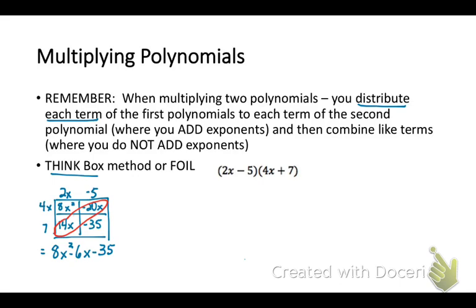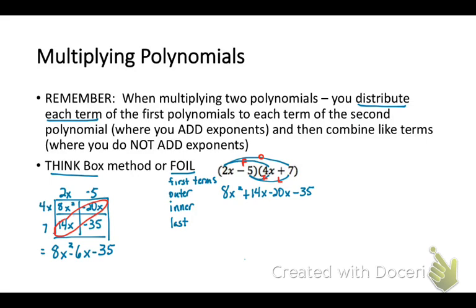You may also prefer the FOIL method, which is an acronym to help you remember how to multiply all terms together. First, multiply the first terms together to get 8x squared. Then the outer terms give 14x, the inner terms give negative 20x, and the last terms give negative 35. Those arcs show you how to get everything multiplied together. Then, just like with the box method, combine like terms and you'll get the same answer.